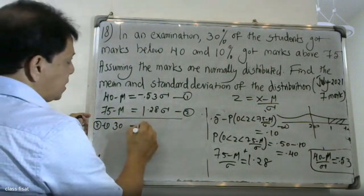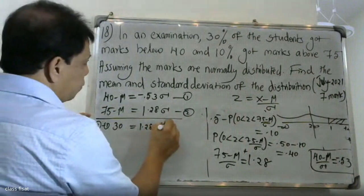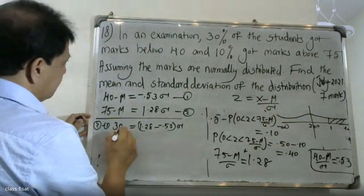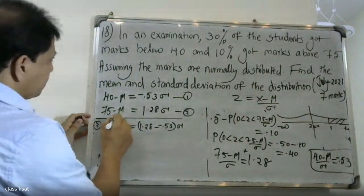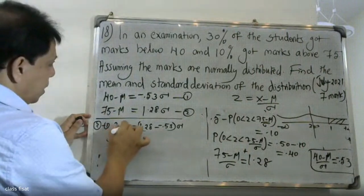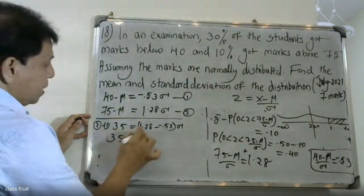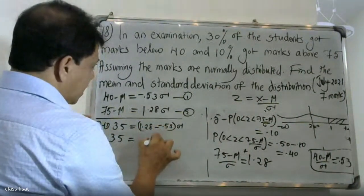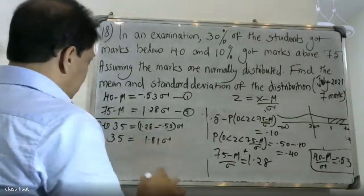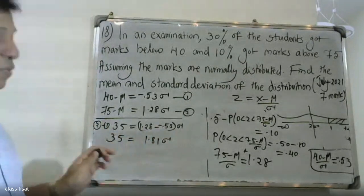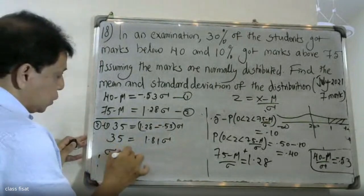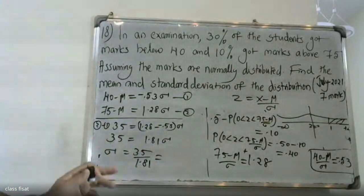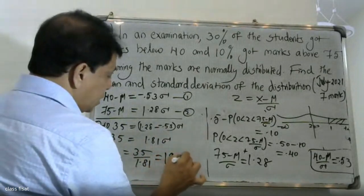Subtracting equation 1 from equation 2: (1.28 minus (minus 0.53)) sigma equals 75 minus 40. So 1.81 sigma equals 35, giving sigma equals 35 divided by 1.81, which equals approximately 19.34.